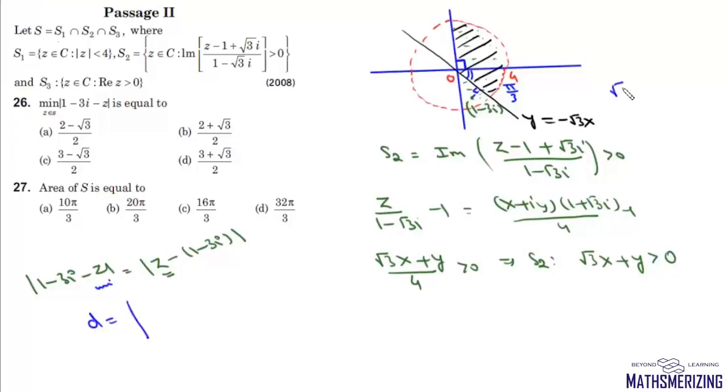The perpendicular distance of this line √3x + y = 0 from this point (1, -3) will be (√3 - 3)/√(a² + b²), which is 2. So this minimum distance will be (3 - √3)/2. So the minimum value of this modulus is (3 - √3)/2.